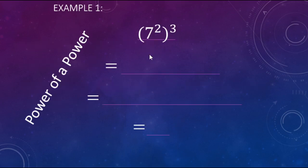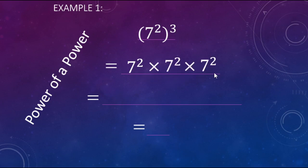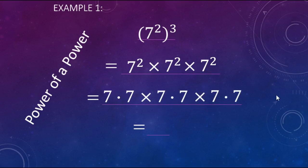When we look at power to a power, here we have 7 to the 2nd power to the 3rd power. The 3 here is telling you how many 7 squareds you have being multiplied. So you have 3 seven squareds being multiplied: 1 seven squared times a 2nd seven squared times a 3rd seven squared. We can further expand this — that's 7 times 7, times another 2 sevens being multiplied, times another 2 sevens being multiplied. So here we have a grand total of 6 sevens being multiplied together: 7 to the 6th power.